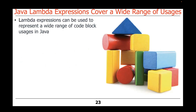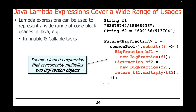Lambda Expressions can cover a very wide range of usages. We can use them for Runnable or Callable tasks — we already saw the use of a lambda expression for a Runnable. Here's another simple example that uses a Callable, where we're going to submit a Callable lambda expression that will concurrently multiply two BigFraction objects together using the common fork-join pool, which is a way of running things in a background thread.